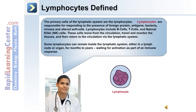Lymphocytes move from the circulation, travel and monitor the tissues, and then return to the circulation via the lymphatic system. Some lymphocytes can remain inside the lymphatic system in either the lymph node or a lymph organ for months to years, waiting for activation as part of an immune response.